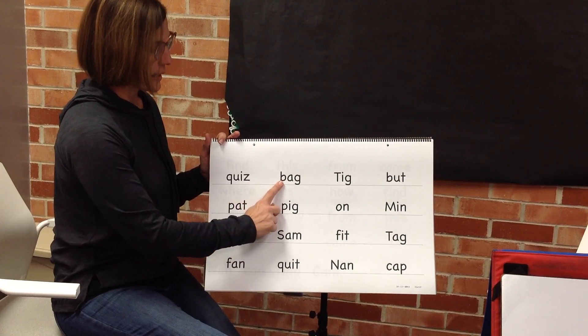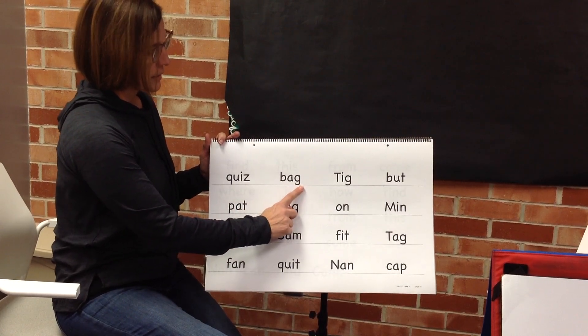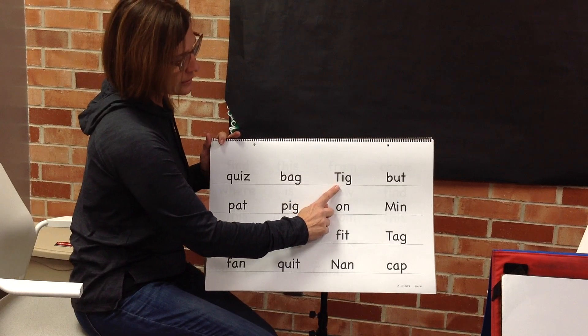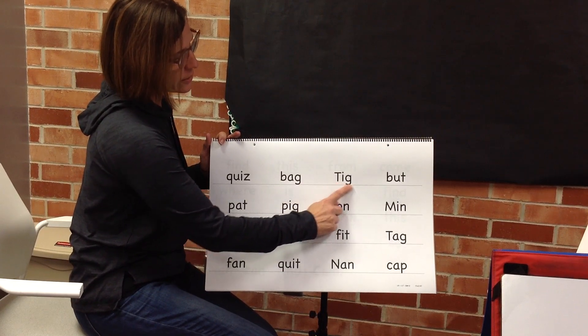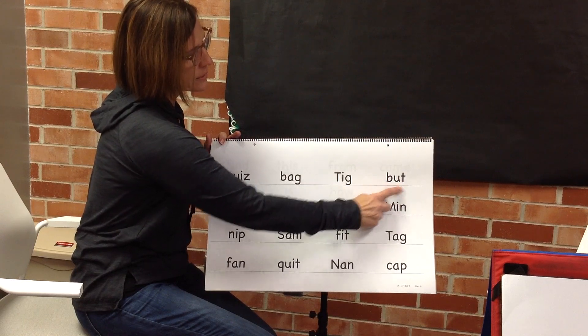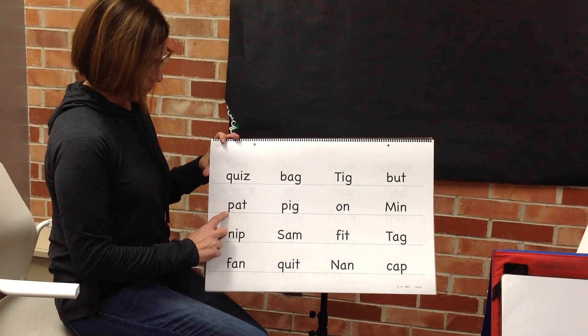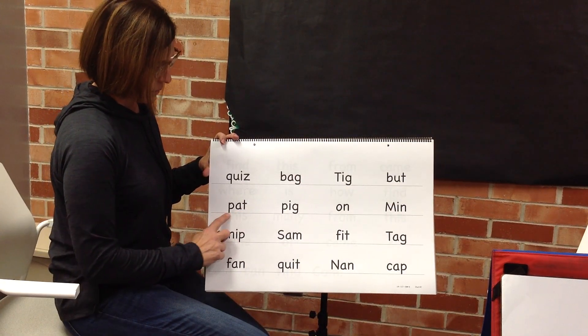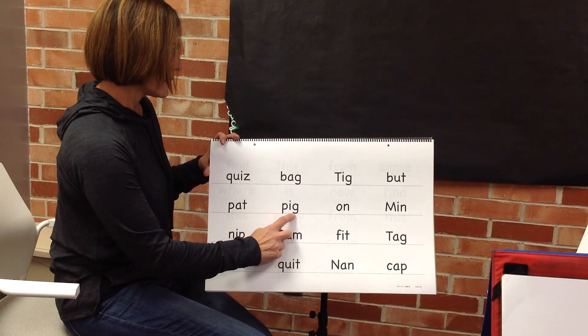Blend tig, word tig. Blend but, word but. Blend pat, word pat. Blend pig, word pig. Blend on, word on. Blend men, word men.